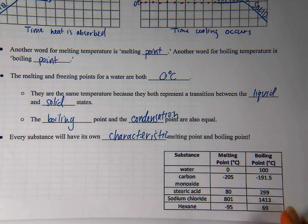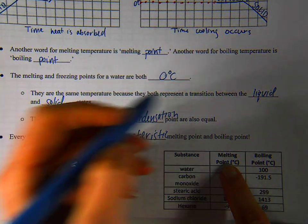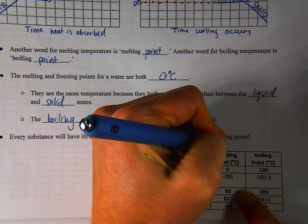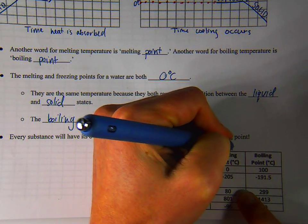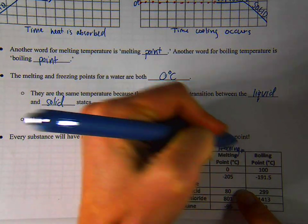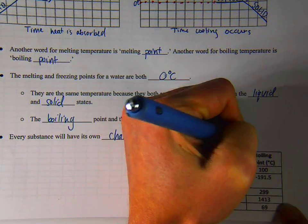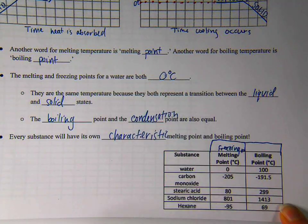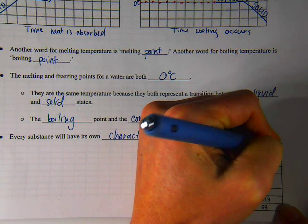Other substances have different melting and boiling points. You could also call these, the melting point is always the same as the freezing point. And the boiling point, we could also list it or think of it as the condensation point.